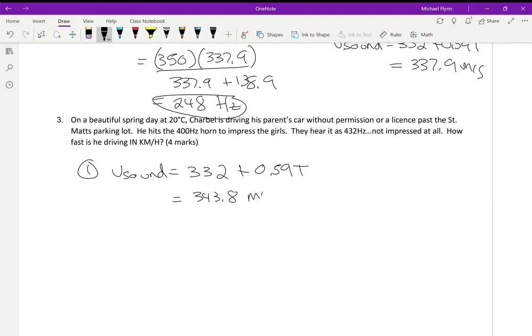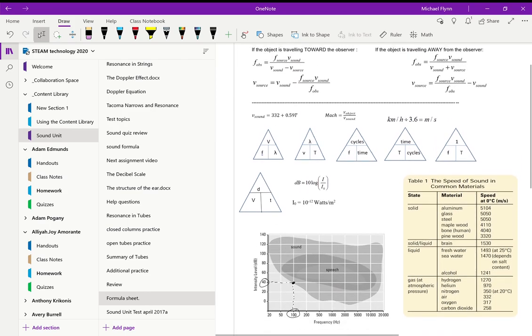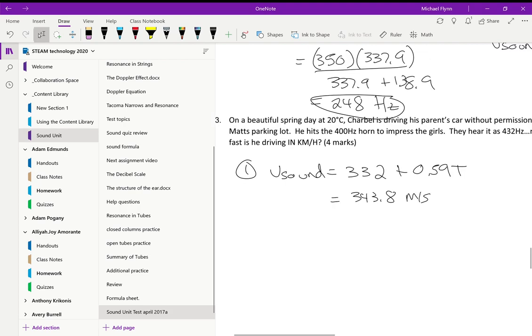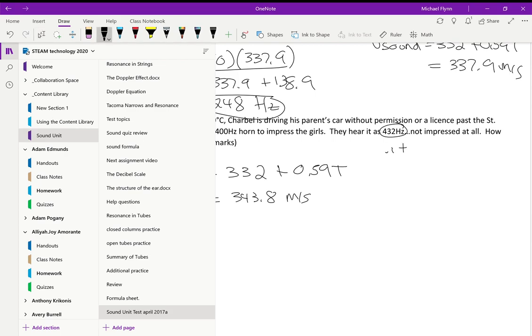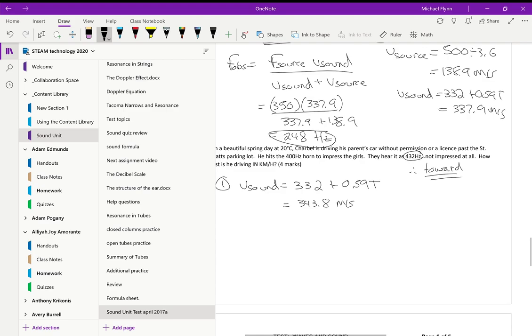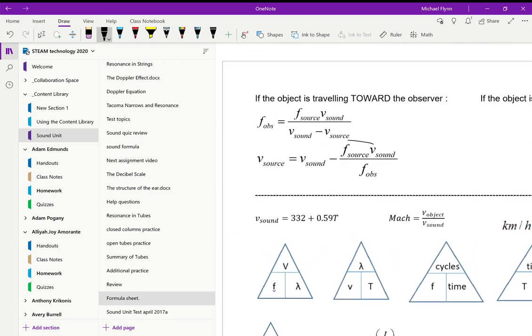Okay, so 343.8 meters per second - that's the speed of sound. Step two: how fast is he driving? We go to our formula sheet, to the Doppler equations. He must be traveling towards them because they hear an increase in frequency. So therefore, because it's higher, it's toward. We go to the formula sheet, Doppler, toward, and the speed of the source is this formula here. It's the speed of sound minus the speed of source times speed of sound. So the speed of the source equals speed of sound minus frequency of the source times the speed of sound divided by the frequency observed.